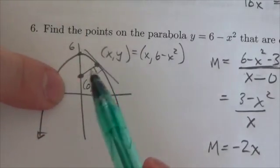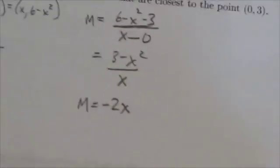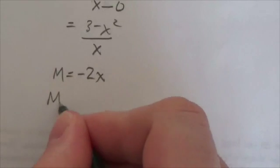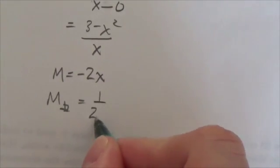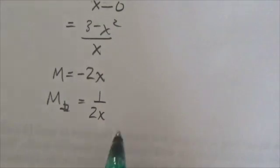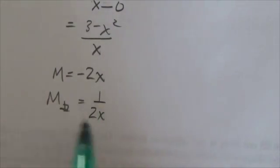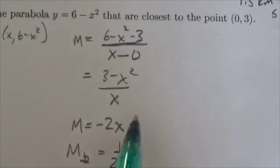Okay, so the normal essentially to that is going to be positive one over 2x. And so what we're interested in is where this slope is equivalent to this slope. So we'll come up over here, we'll set up that little equation: one over 2x is going to equal three minus x squared over x.